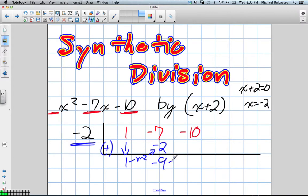What's negative 2 times negative 9? 18. Perfect. Negative 10 plus positive 18? 8.